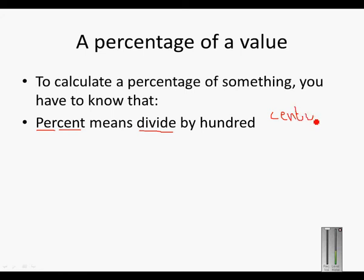And century is a hundred years. When we work with rand and cent, there is a hundred cent in a rand. So therefore cent means hundred. Of means multiply. So if I ask a certain percent of something, I'm going to multiply that percentage with the number.